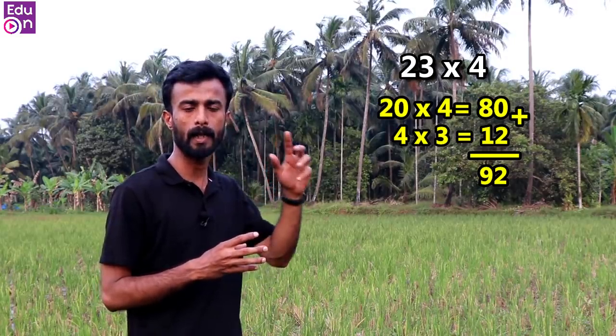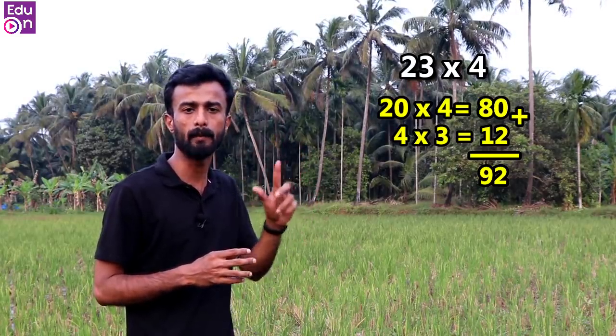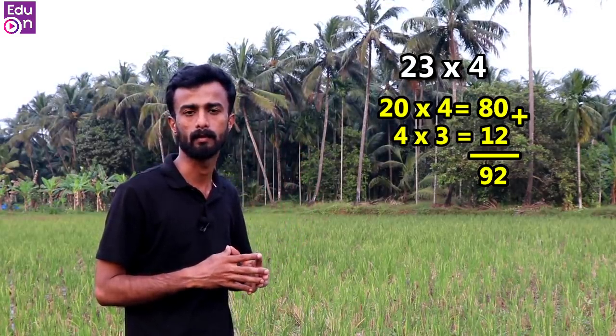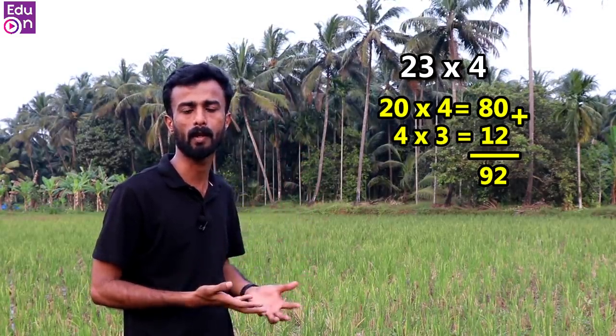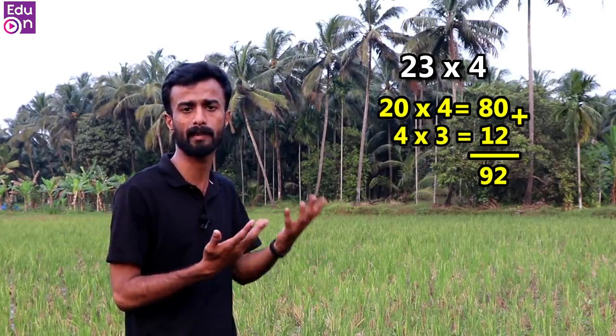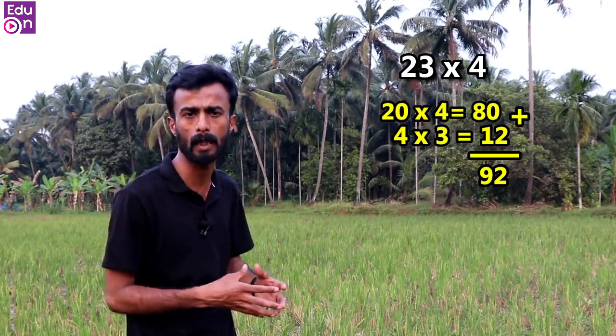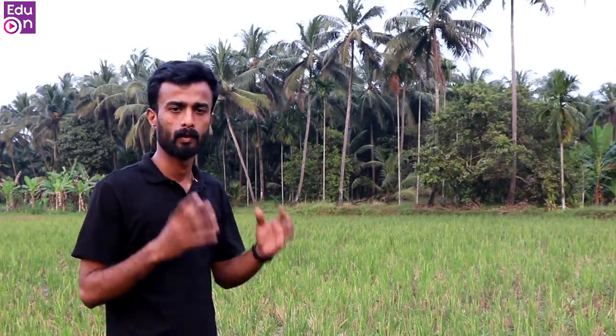The first step: you will have 4×3 = 12. We have to calculate everything the same way, step by step.